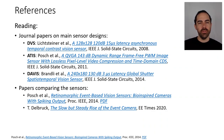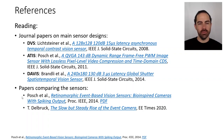Here are some references. I encourage you to look at the journal papers of the three main sensor designs: the DVS from 2008, the ATIS from 2011, and the DAVIS from 2014. There are also papers that compare the sensors, such as one from Proceedings of the IEEE 2014, and a very recent paper on the general topic of event cameras. Thank you very much.